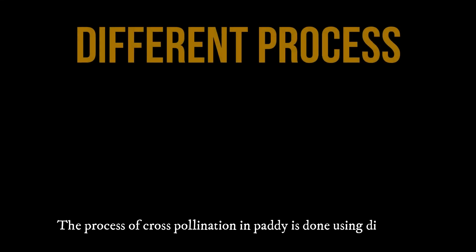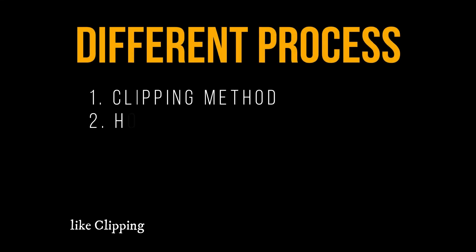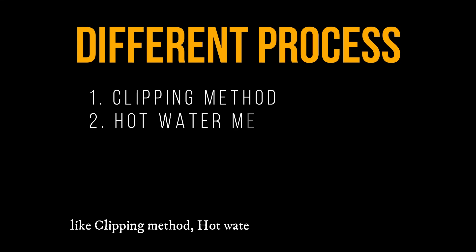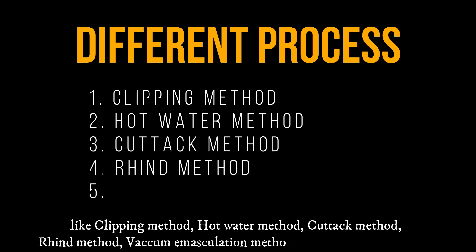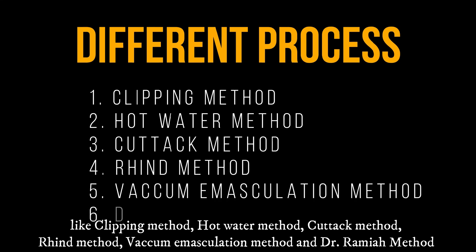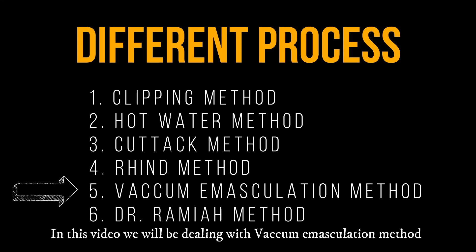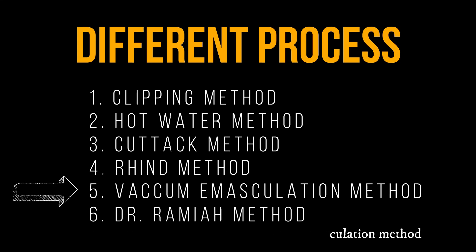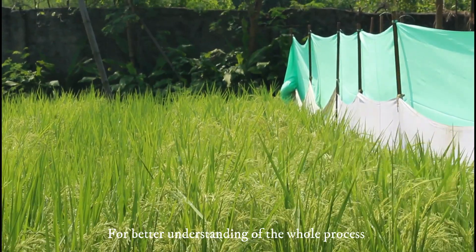The process of cross-pollination in paddy is done using different techniques and methods like the clipping method, hot water method, cut-up method, rain method, vacuum emasculation method, and Dr. Ramya method. In this video, we will be dealing with the vacuum emasculation method.